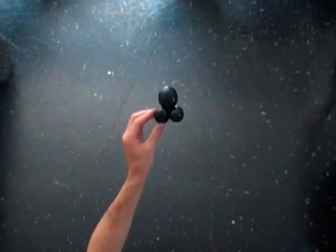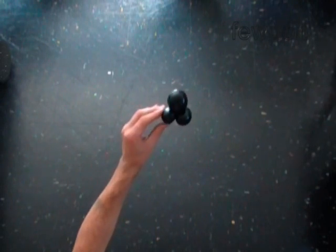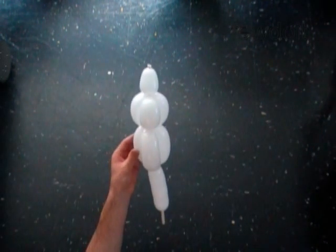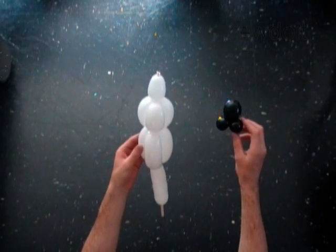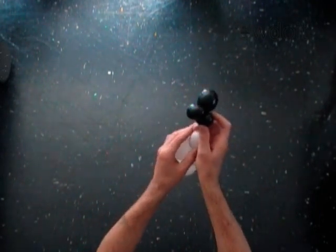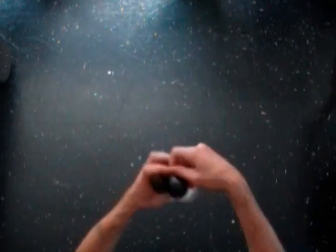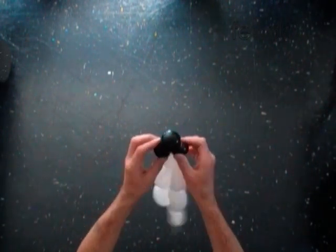Congratulations! You have made the head. I want to show how to attach this head to a snowman. Here is the body of the snowman and there is our head. We have to simply lock the knot or the nozzle of the white balloon between bubbles of the head. Fix all bubbles in proper position.